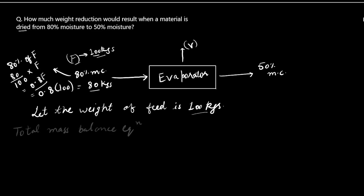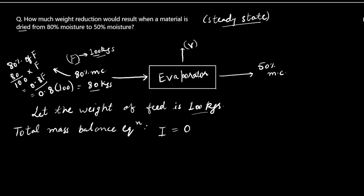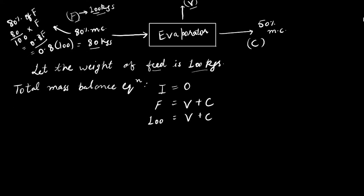This is steady state, so inflow = outflow. The total mass balance is F = V + C, or 100 = V + C, so V = 100 − C. This is Equation 1, and we will use the value of V in the component mass balance equation.